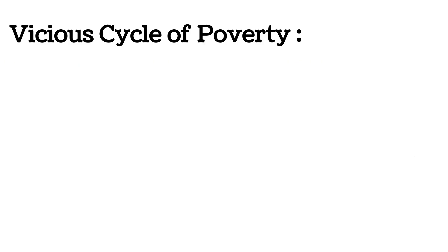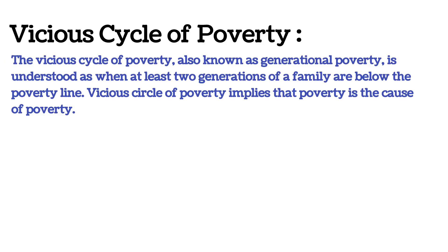Vicious Cycle of Poverty, जिसे generational poverty के रूप में भी जाना जाता है, तब समझा जाता है जब एक परिवार की कम से कम दो पीढ़ियाँ गरीबी रेखा से नीचे होती हैं. गरीबी के Vicious Cycle का मतलब है कि गरीबी ही गरीबी का कारण है.